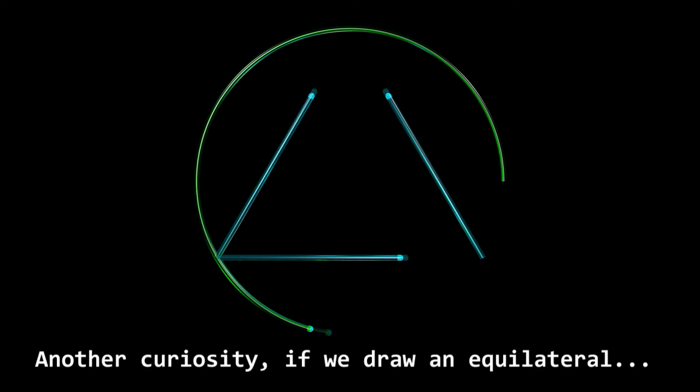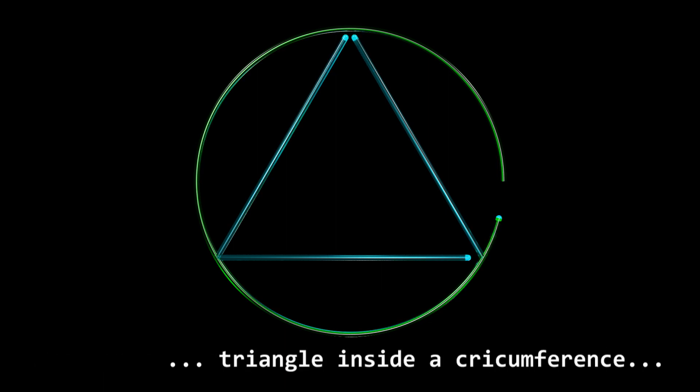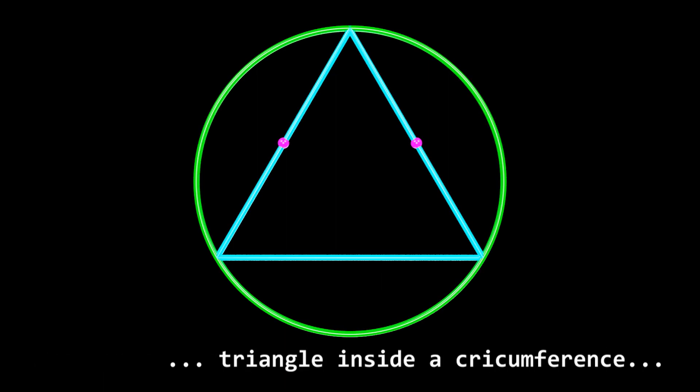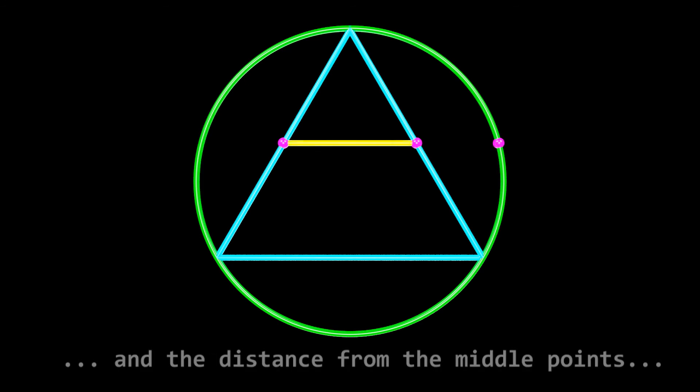Another curiosity. If we draw an equilateral triangle inside a circumference, the distance between the middle points and the circumference, and the distance from the middle points to the center, follow the golden or divine proportion.